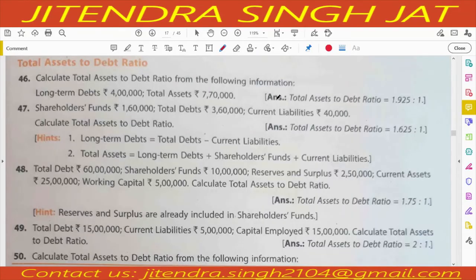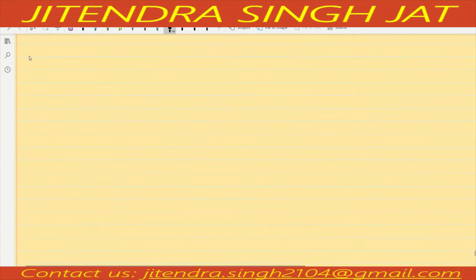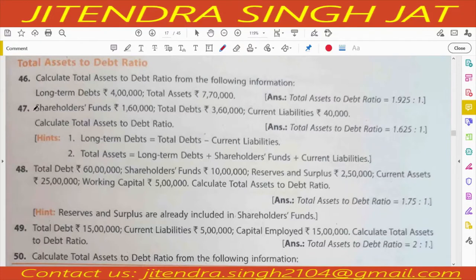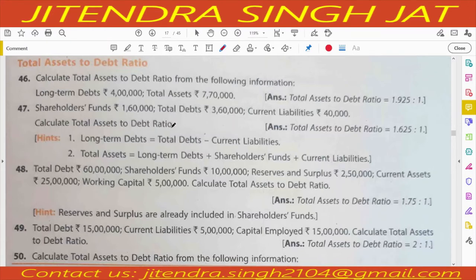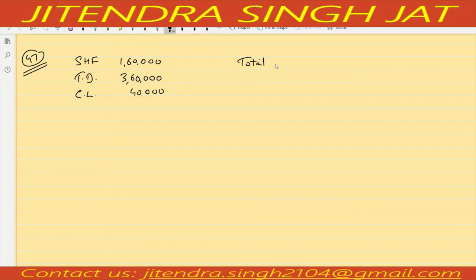Question number 47: shareholder funds are given 1 lakh 60,000; total debts are given 3 lakh 60,000; current liabilities are given 40,000. Calculate total assets to debt ratio. Total assets to debt ratio formula is total assets upon debt.